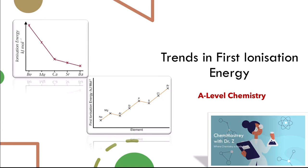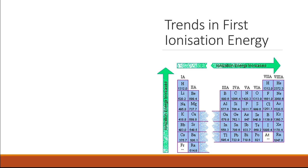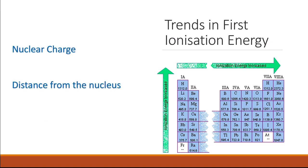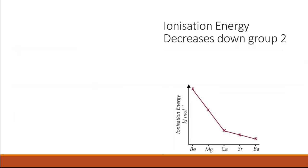Trends in the first ionization energy. When we talked about the first ionization energy and the different factors affecting it, we talked about three factors: nuclear charge, distance from the nucleus, and shielding. Ionization energy increases across the period and decreases down the group. Let's have a closer look at how this affects specific groups and periods.